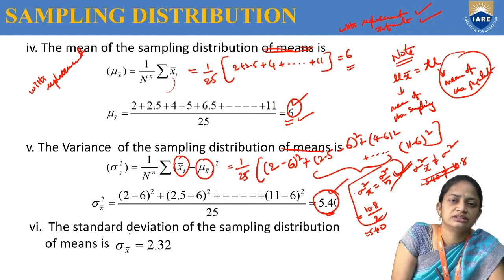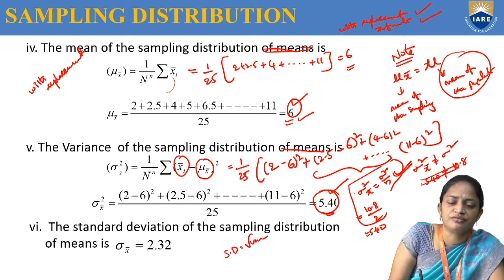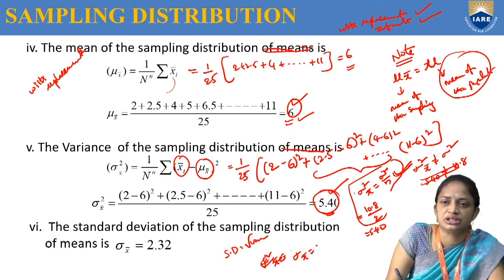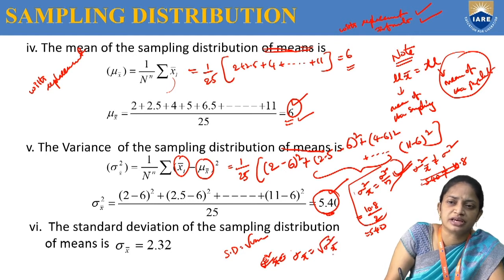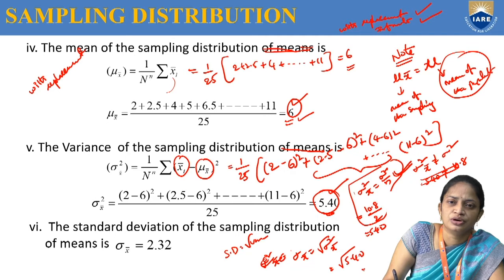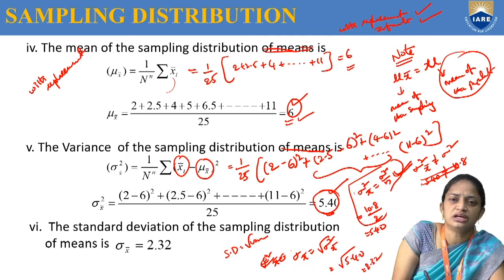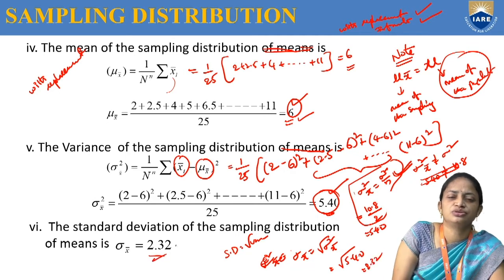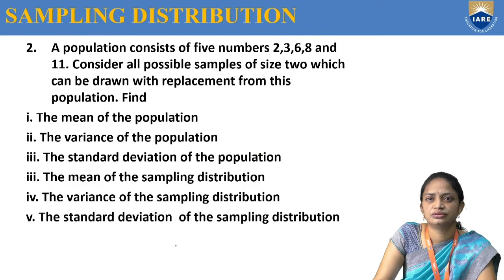For the sixth question, standard deviation of the sampling distribution: sigma x-bar equals the square root of sigma squared x-bar, which is the square root of 5.40, giving approximately 2.32. This is the required solution.